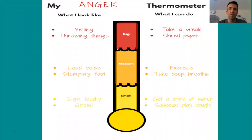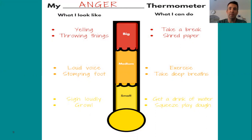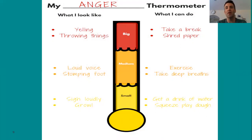Here we've got an anger thermometer. Near the bottom is when you're just starting to feel something's not right — signs might be a loud sigh or a growling noise. Things you can do there: get a drink of water or squeeze some play-doh. In the medium anger zone you might have a loud voice or stomping foot — you could take some exercise or have some deep breaths.